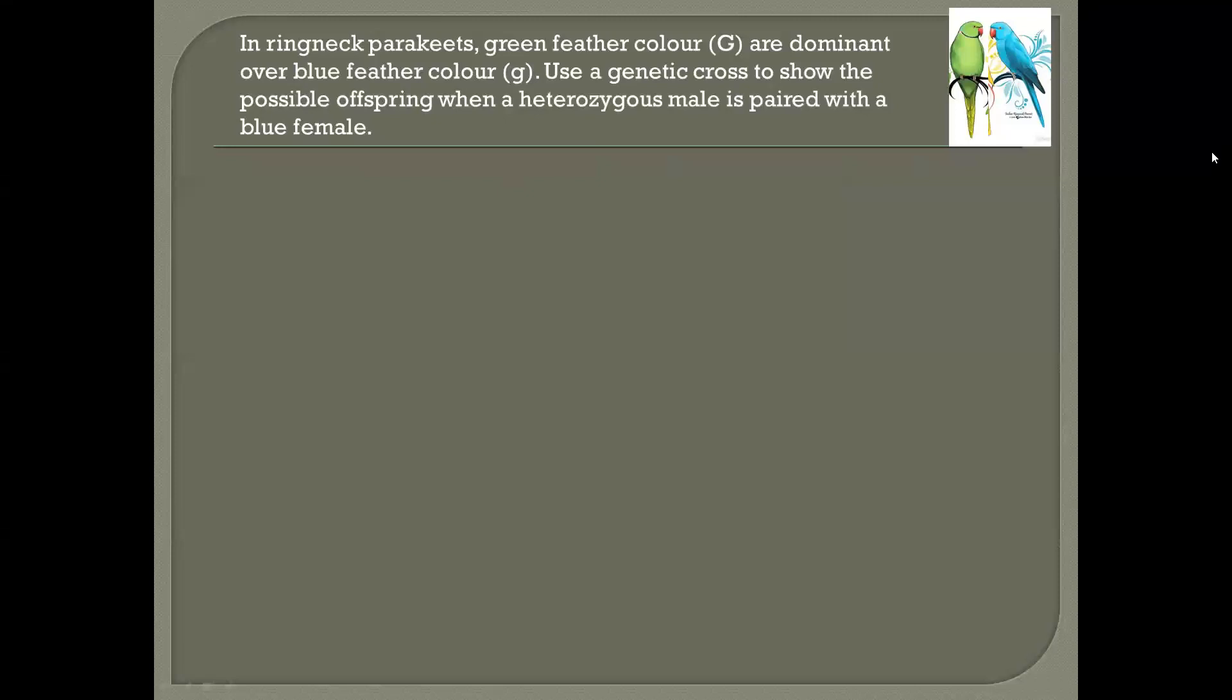Okay, so we'll start off with the cross. Remember that the format of the cross would already give you a few marks. Initially, we're going to have the P1 phenotype and genotype, the parental phenotype and genotype. Looking at the information given to us, we are showing a cross between a heterozygous male. Heterozygous means different, homo means the same, and it refers to the genotype. So the male's genotype would have different alleles, meaning you'll have a capital G paired with a small g. You've got a green as well as a blue allele.